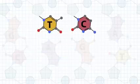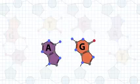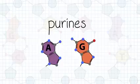Thymine and cytosine are called pyrimidines, characterized by their single ring structure. And adenine and guanine are called purines, which have double rings.